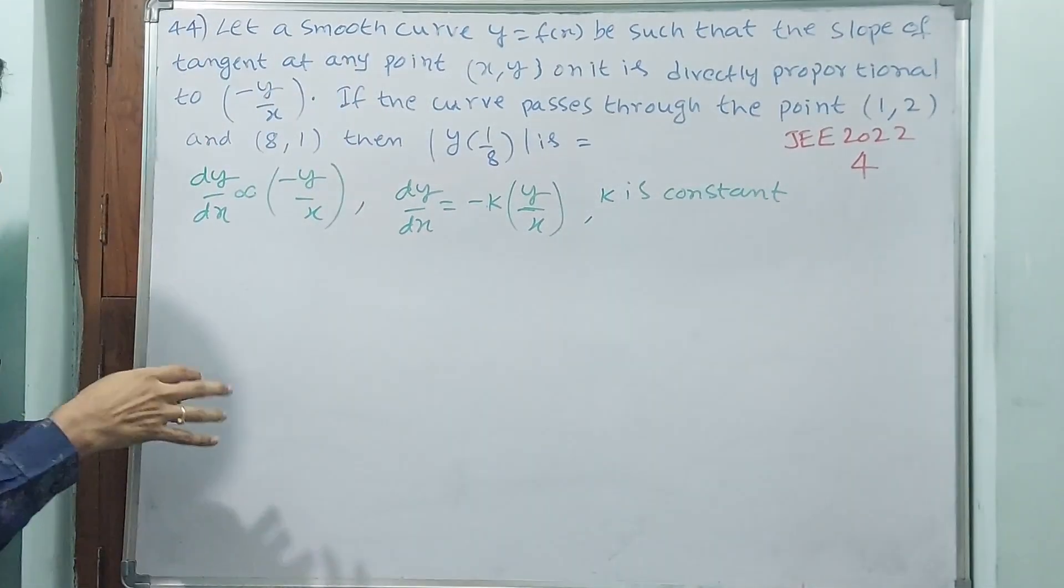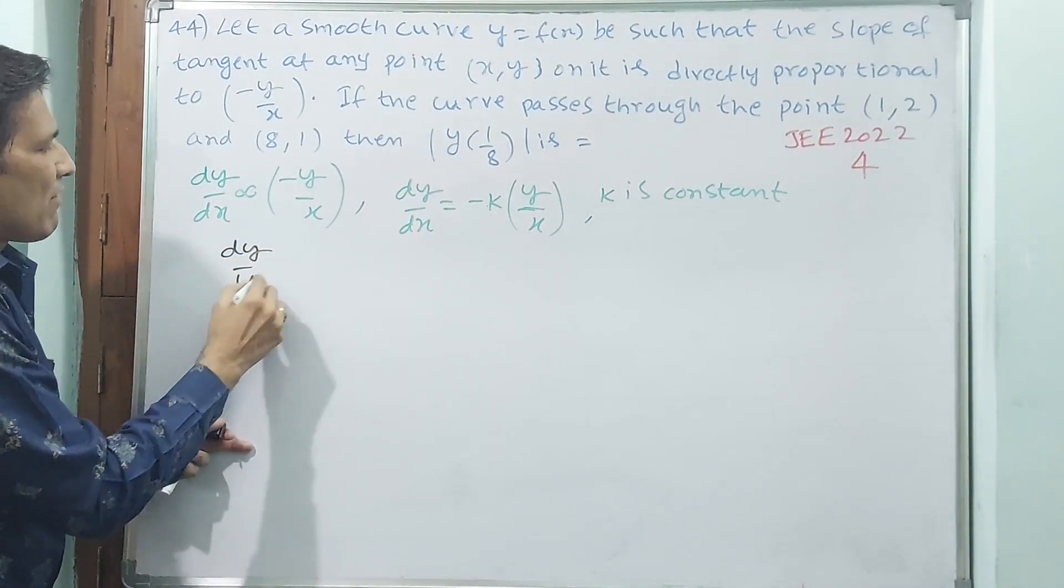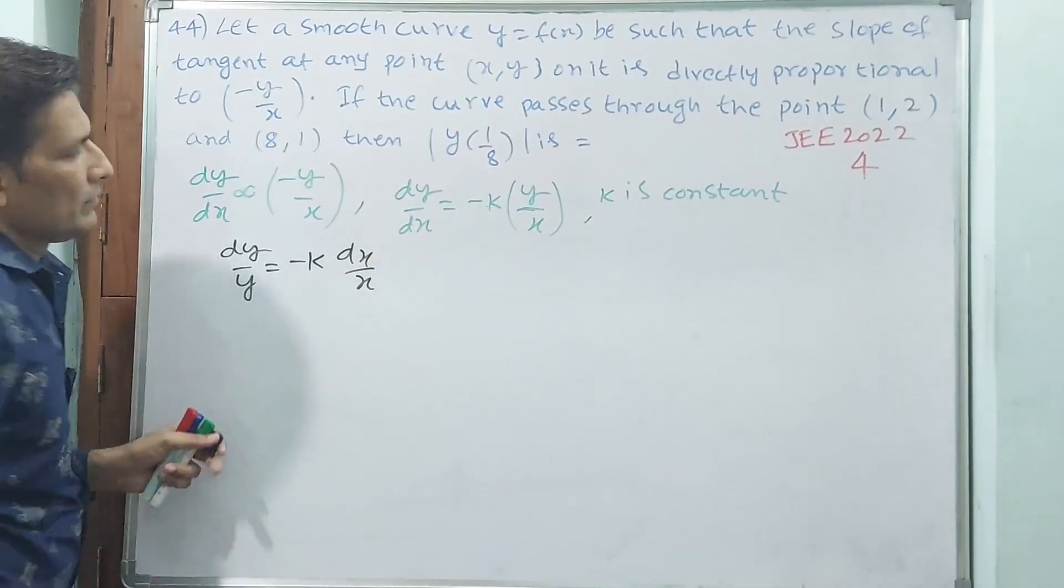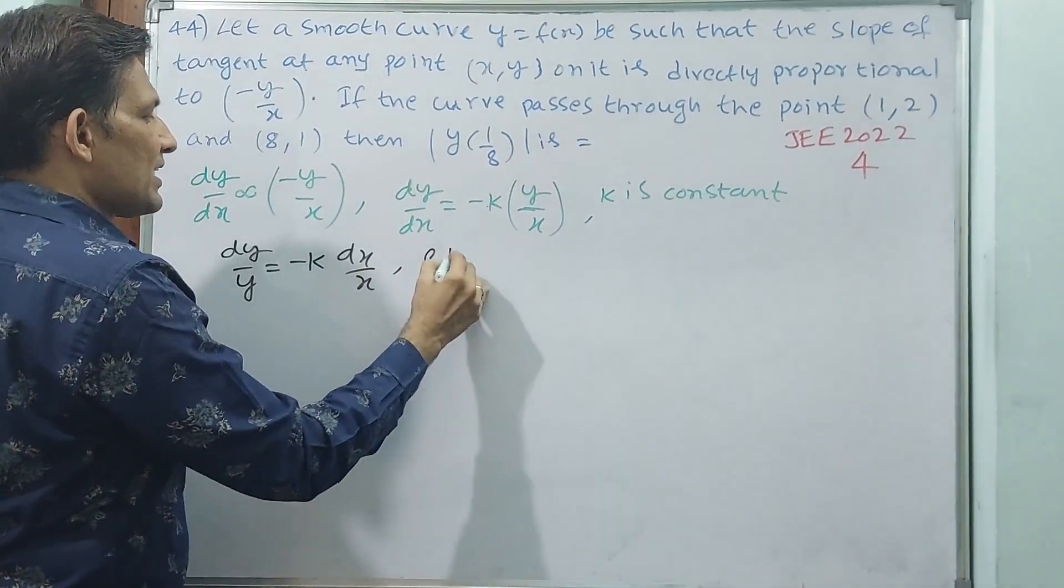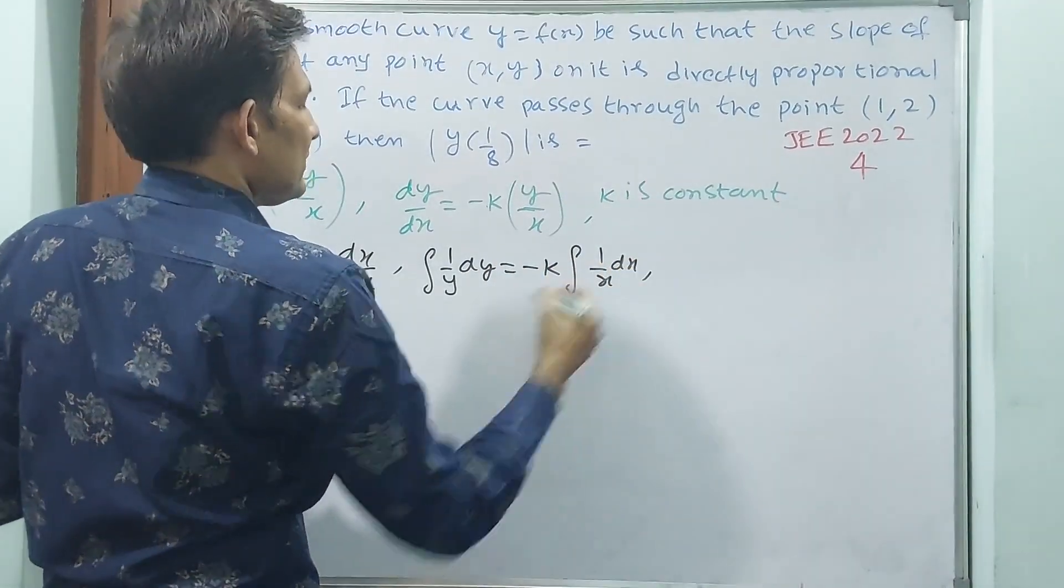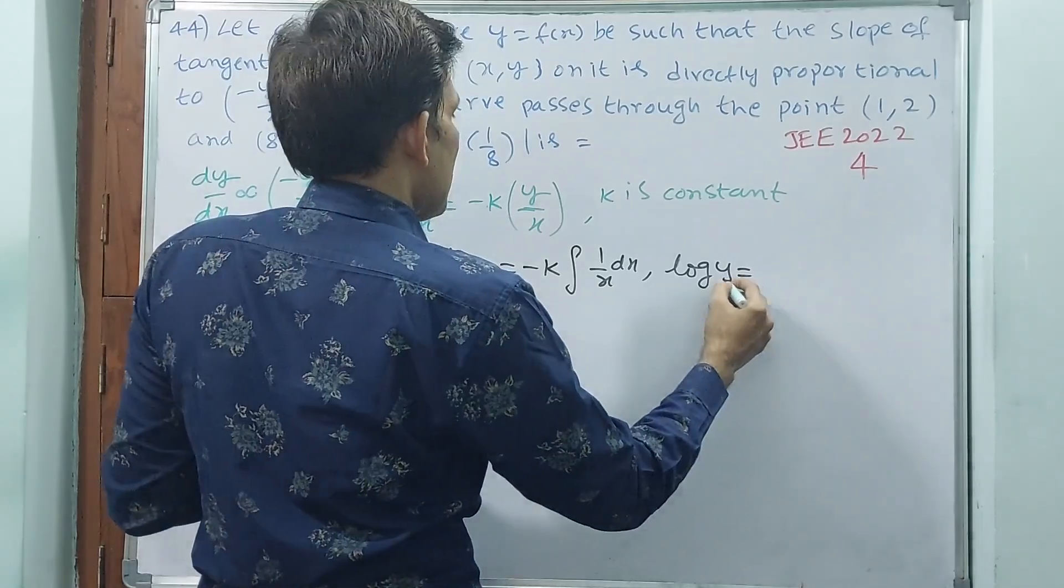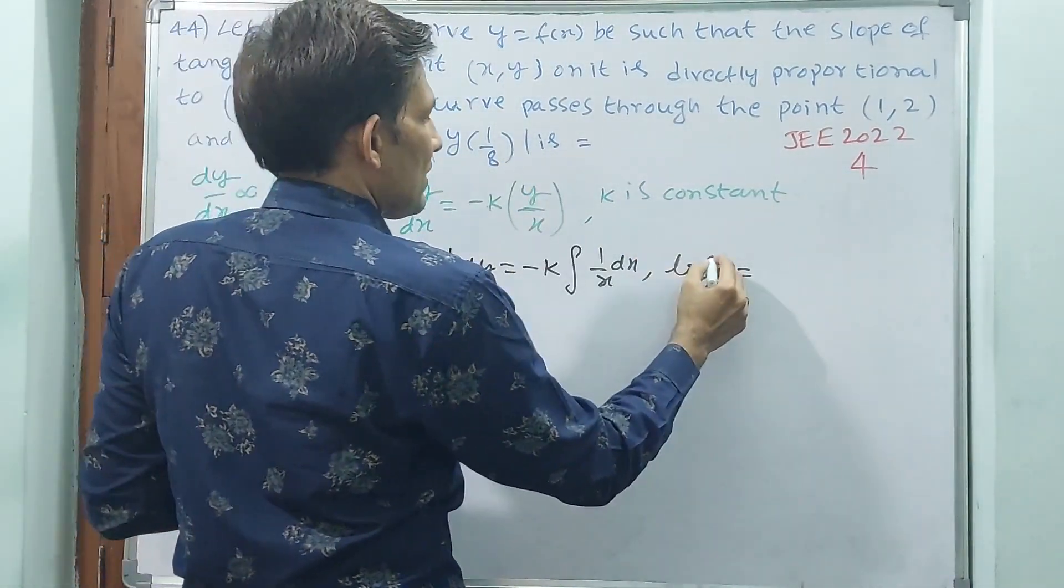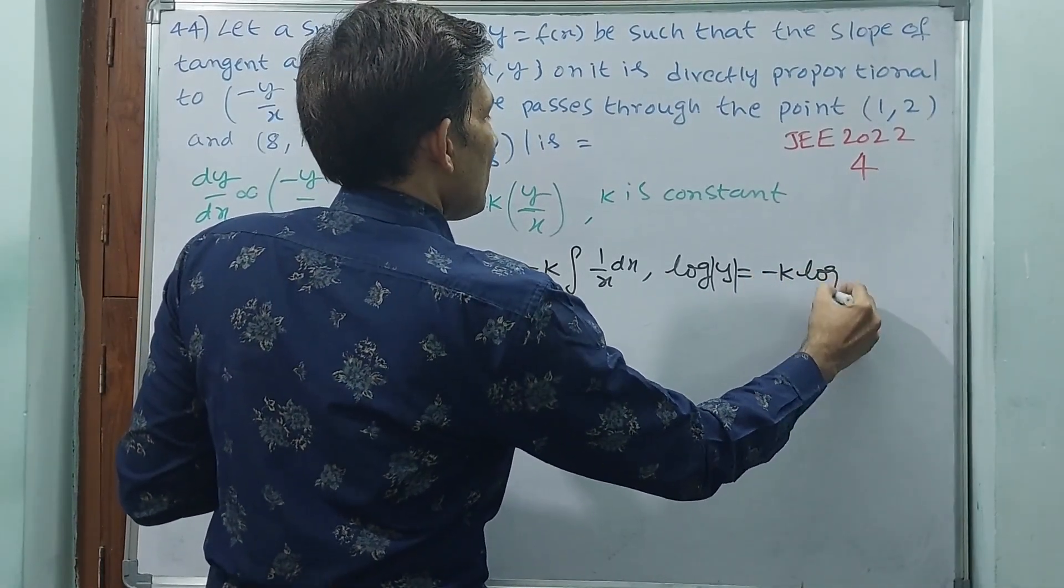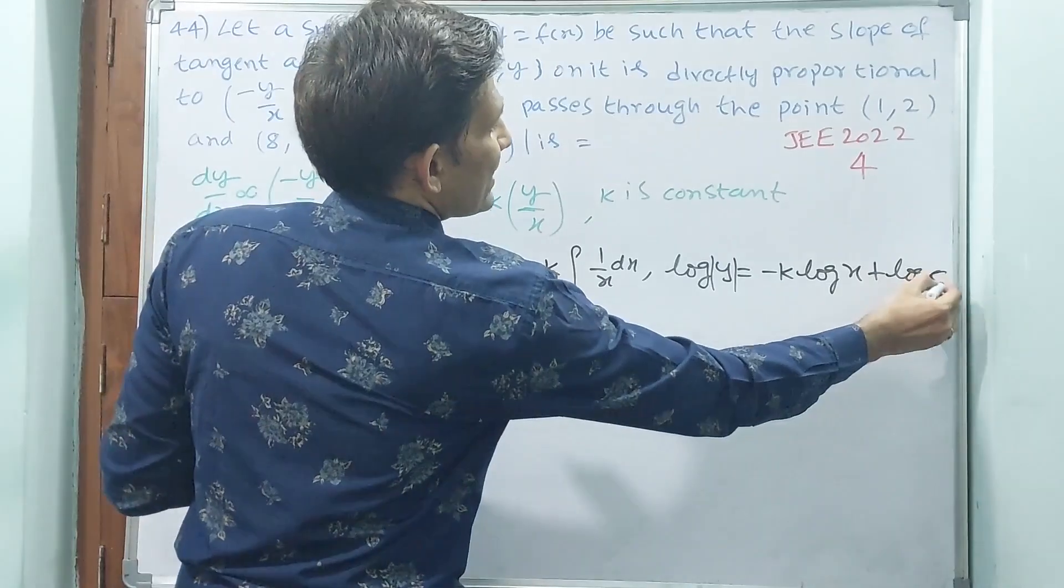Now see, dy by y is equal to minus k into dx by x. If you put integral, integral 1 by y dy is equal to minus k integral 1 by x dx. Log y, or modulus y - that is why they are giving modulus. Log of modulus y is equal to minus k times log of x plus log c. Why? Because again two are logs, and the constant can also be written as log.